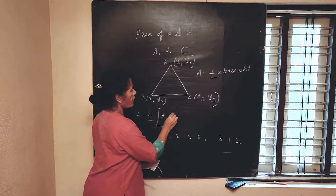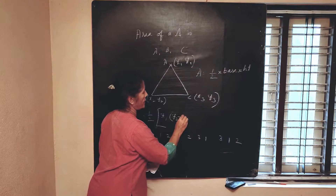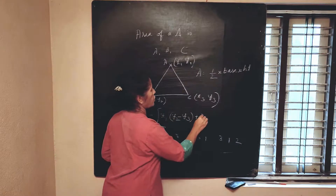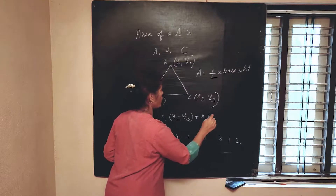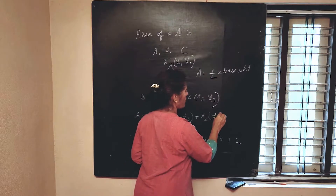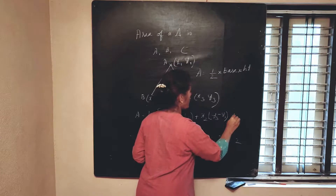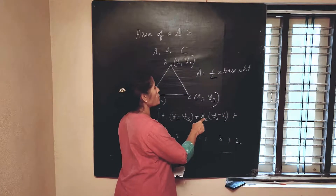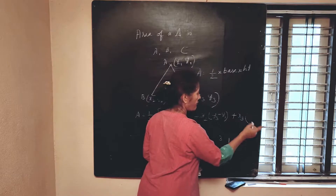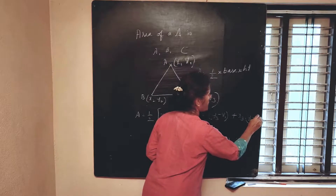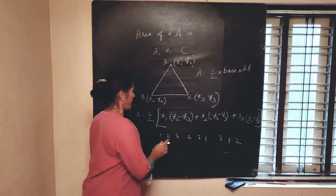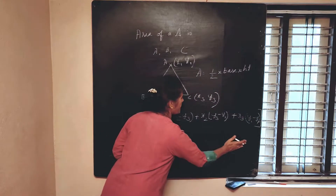So the formula is: x1 into (y2 minus y3) plus x2 into (y3 minus y1) plus x3 into (y1 minus y2). You can remember it very easily.